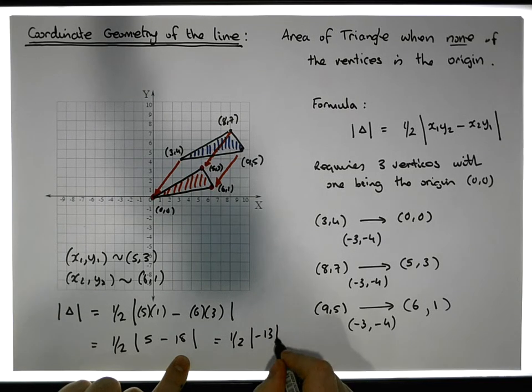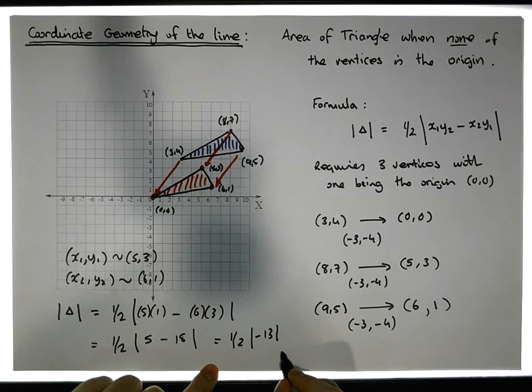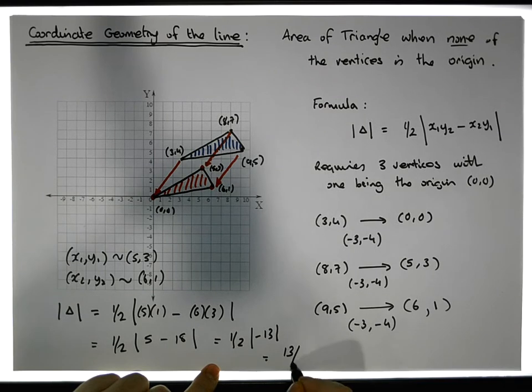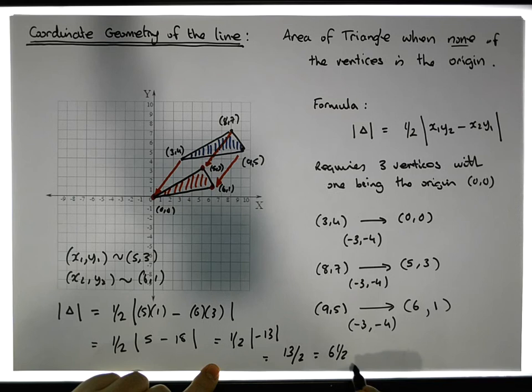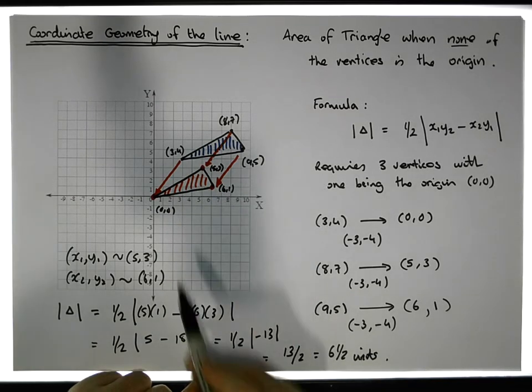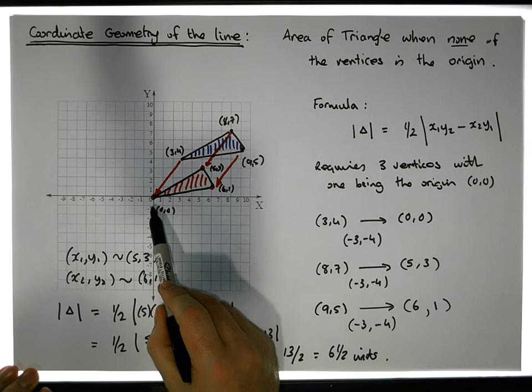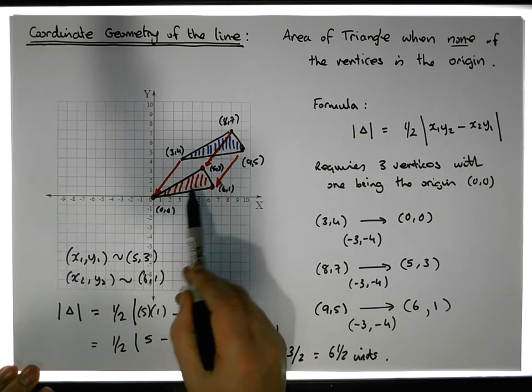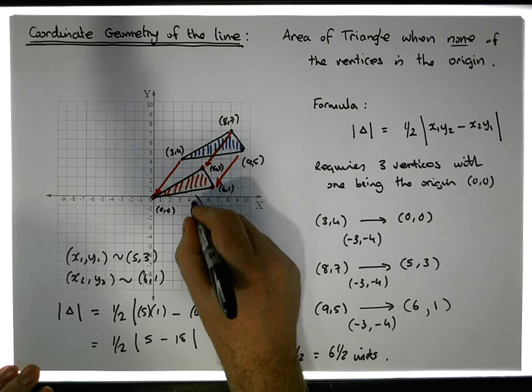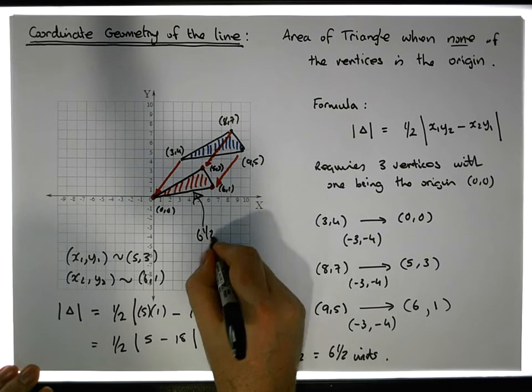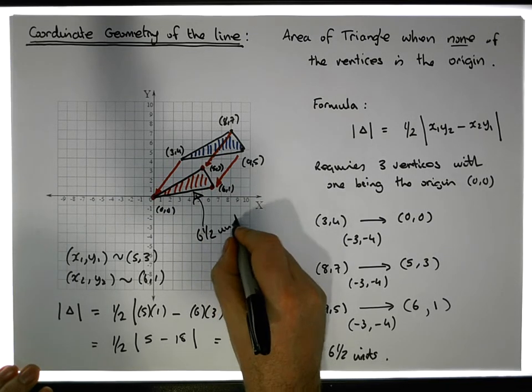So that gives us a half of the absolute value of minus 13, so the absolute value of that is 13. So it's actually equal to 13 halves, which is equal to 6 and a half units, which is the area of this triangle here centered on with one of its vertices as 0,0.